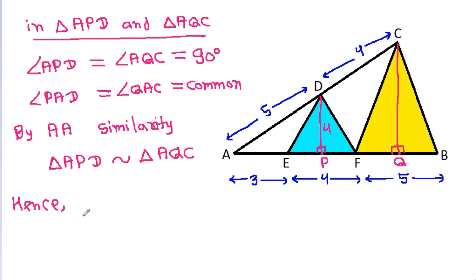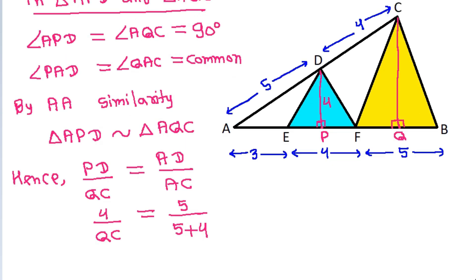Hence, PD by QC will be equal to AD by AC. So 4 by QC equals AD which is 5 by AC, which is 5 plus 4.